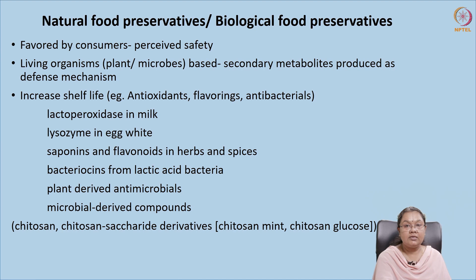Preservatives are classified into natural preservatives and artificial preservatives. Natural preservatives are also called biological preservatives, and consumers generally prefer them because they are derived from living organisms — either plant or microbe derived. These are generally secondary metabolites produced by plants or microbes as a defense mechanism. Whenever there's an infestation or threat, they produce a secondary metabolite to protect themselves, and these secondary metabolites are used as preservatives.